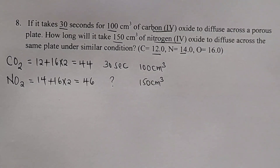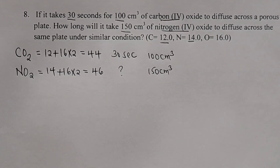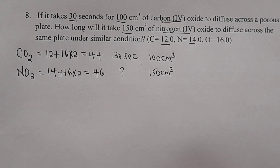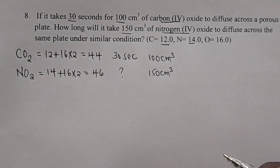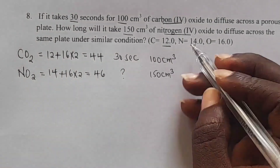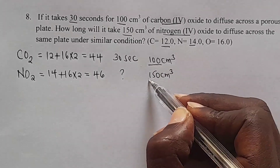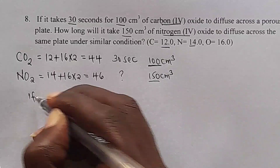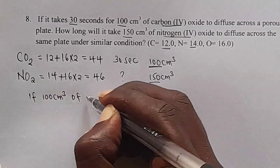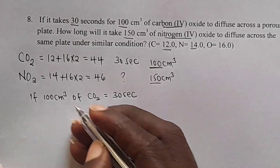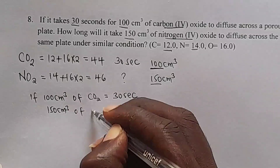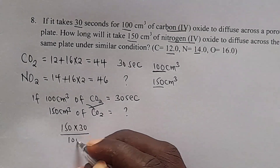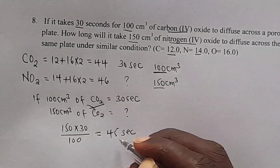The first way is to make the volume of carbon dioxide and nitrogen dioxide equal. We use equal volumes so that the relationship we use will be time with the square root of molecular mass. We need to scale carbon dioxide's volume from 100 to 150 cm³. If 100 cm³ of carbon dioxide takes 30 seconds, then 150 cm³ takes 150 × 30 ÷ 100 = 45 seconds.